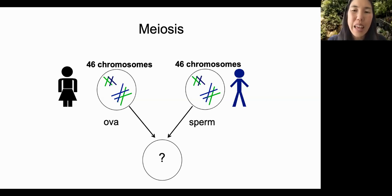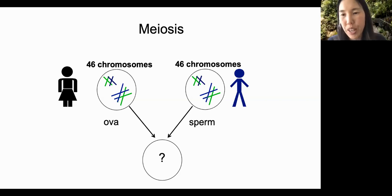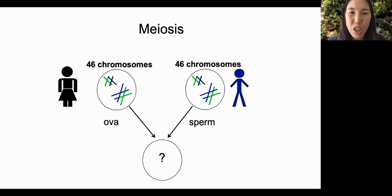46 plus 46 equals 92. Then imagine if reproduction happened again, and you had 92 plus 92 chromosomes equals 184 chromosomes, and so on. Clearly, this would be a problem. Meiosis is our solution.